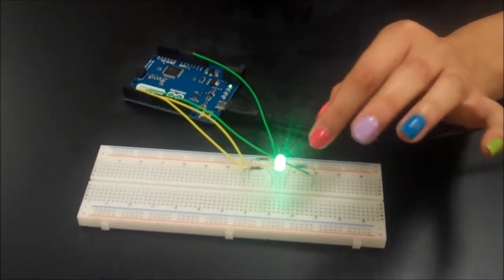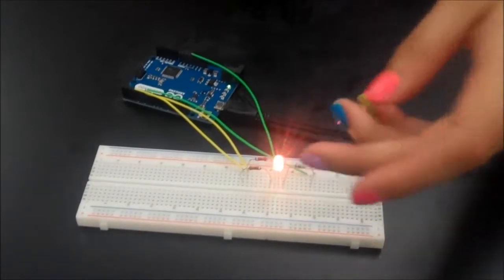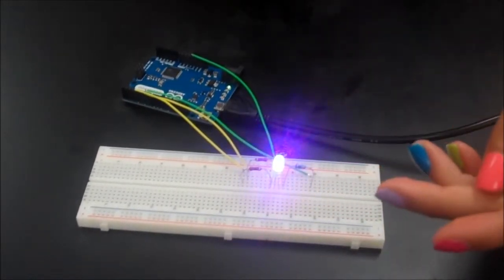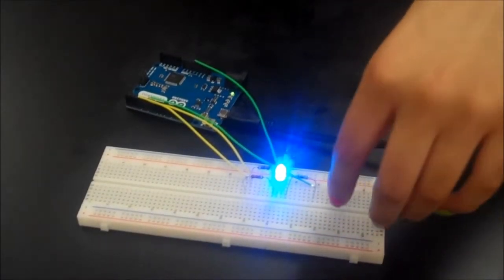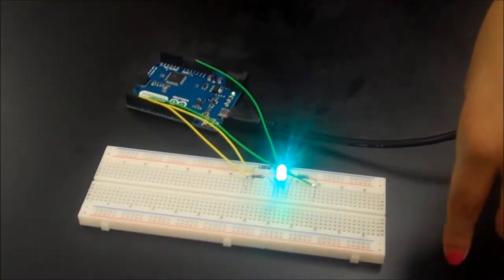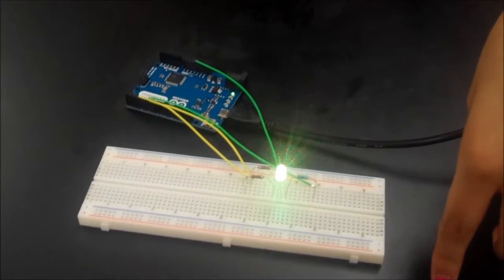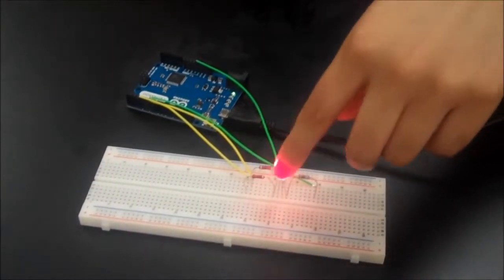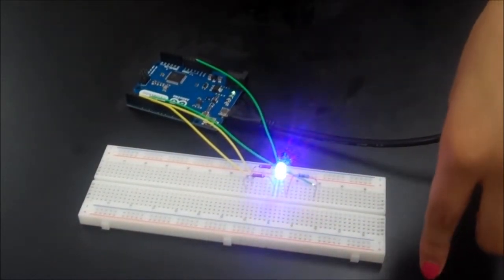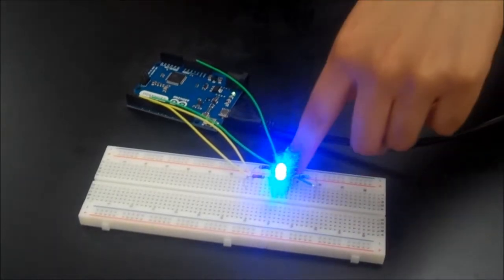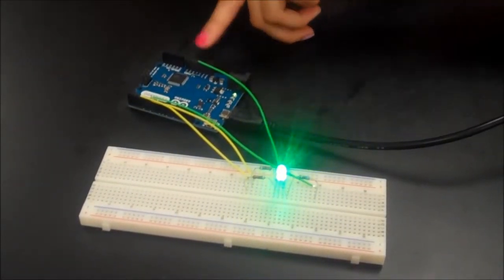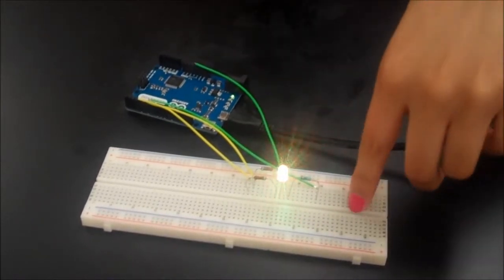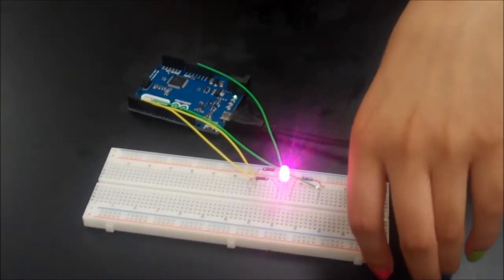Each pin on the LED stands for something - for a color. The outer left one is the red pin, and the middle one is the power, which is also connected to the 5 volts on the Arduino.